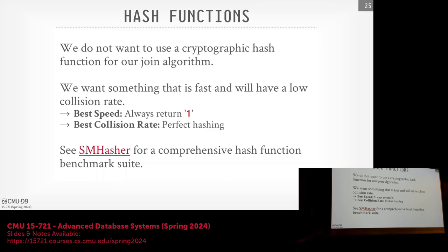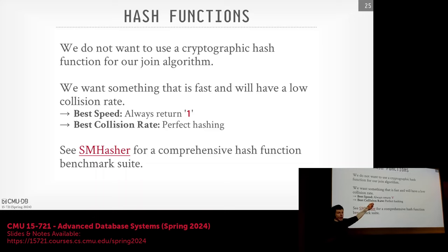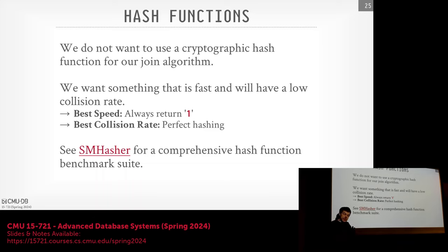For the hash function, there's a trade-off between speed and low collision. The fastest hash function is literally returning one — no matter what key you give it — but that's terrible for collision. On the other end, perfect hashing guarantees a unique hash value for any possible key, but a truly perfect hash function only exists in theoretical literature. Jignesh and his PhD student at Wisconsin are working on a practical implementation of perfect hashing, which we won't cover. For most systems, you take a hash function off the shelf rather than writing your own, and focus more attention on getting the hash table implementation right. That's where you want to spend most of your time.